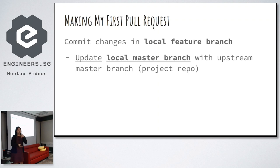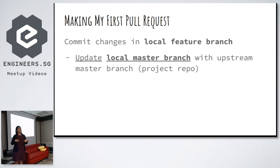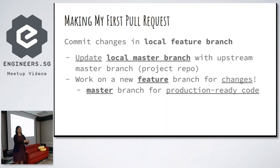After the environment is ready, I go into the environment and commit changes in the feature branch. In your GitHub you have a remote repo with a master branch. You clone it, so you have a local master branch. But before you do anything, they might have made some updates, so you have to update your local master branch with the upstream master branch because they make changes to the master repo every day. After you have an updated local master branch, you work on a new feature branch to build your changes. Don't touch the master branch — it's for production-ready code.